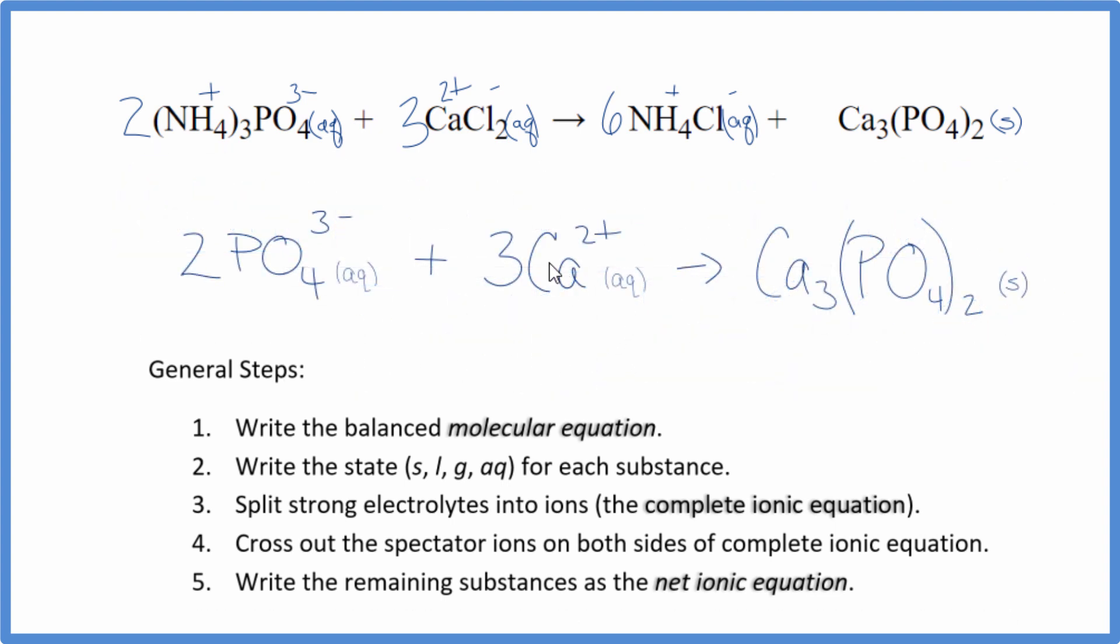So this is the balanced net ionic equation for NH4 3PO4 plus CaCl2. You'll note that charges conserved, I have 2 times 3 minus, that's 6 minus. 3 times 2 plus is 6 plus. 6 minus 6 plus adds up net charge of 0. This is a neutral compound, net charge of 0. The atoms, they're balanced as well.